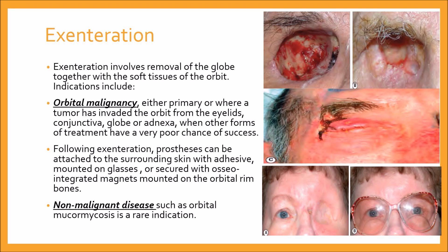Following exenteration, a prosthesis may be attached to the surrounding skin with adhesive, or mounted on glasses — as you can see in the bottom picture, the prosthesis is attached to the glasses — or secured with osseointegrated magnets mounted on the orbital rim. The socket may be lined with skin or split skin graft, or left to heal by secondary intention. This is also indicated in non-malignant diseases such as orbital mucormycosis, which is a rare indication.